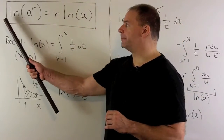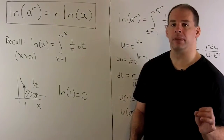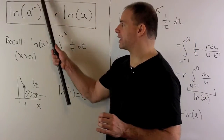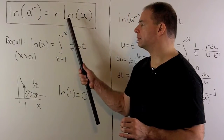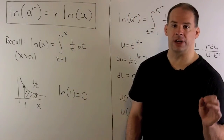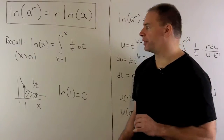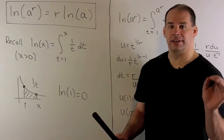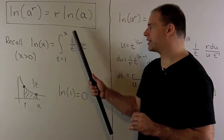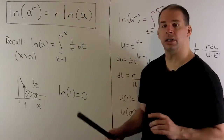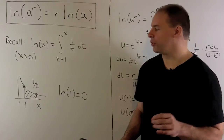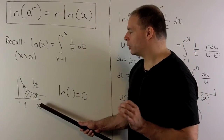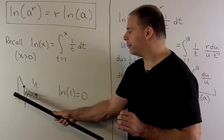The first property is natural log of a to the r equals r natural log of a — we take the exponent on the inside and move it to the front. Our definition: if x is greater than zero, natural log of x is defined as the definite integral as t goes from one to x of one over t dt. So if I take the graph of one over t, we mark off one and x, and we're just taking the area under our graph and above the x-axis.